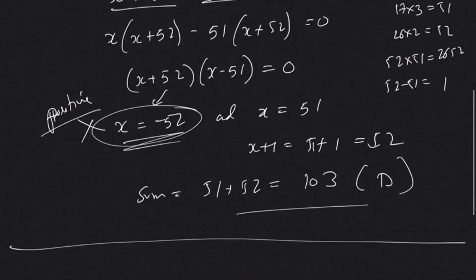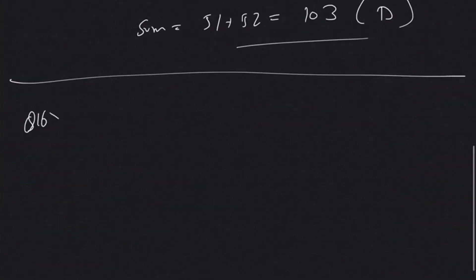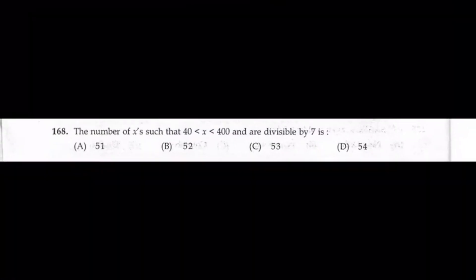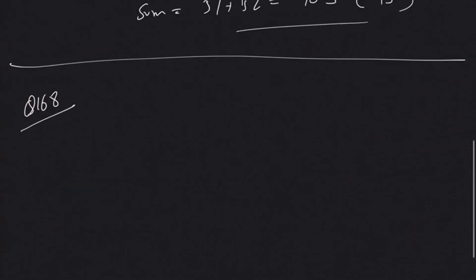Moving on to the next question, question number 168. The question states: the number of x's—x is what numbers between 40 and 400 which are divisible by 7. So x is a number divisible by 7, and x is lying between 40 and 400.